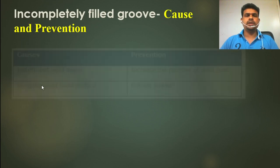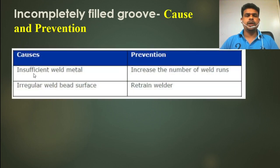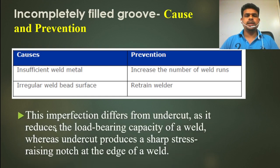What is the cause and prevention? The cause is insufficient filler metal. The prevention is to increase the number of weld runs. This imperfection differs from undercut in that it reduces the load-bearing capacity of the weld, whereas undercut produces a sharp stress-raising notch at the edge of the weld.